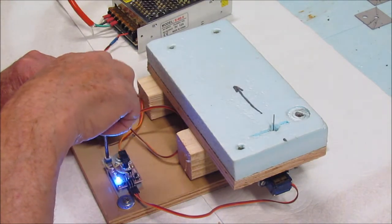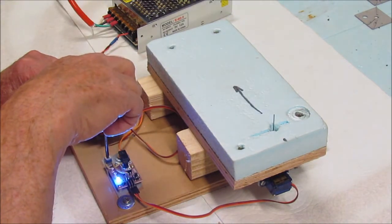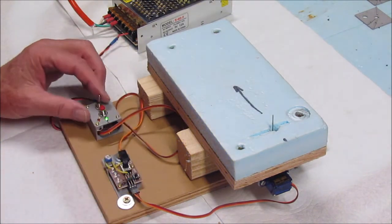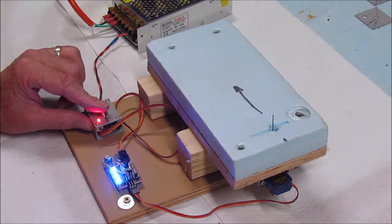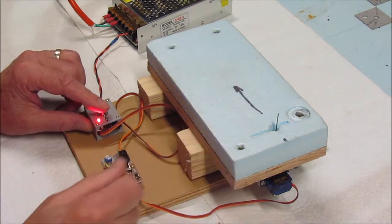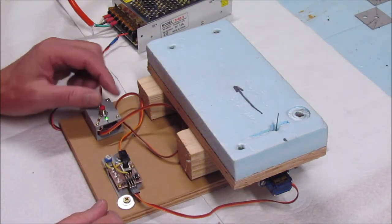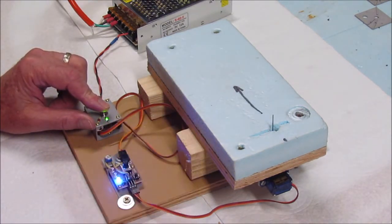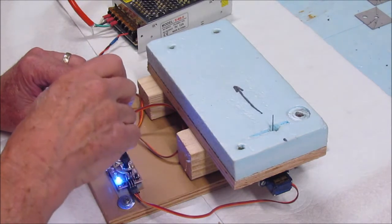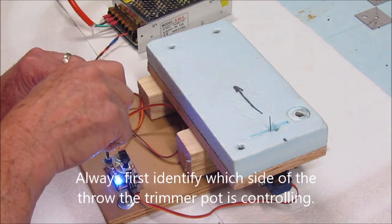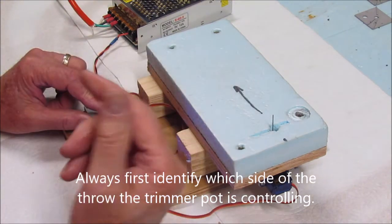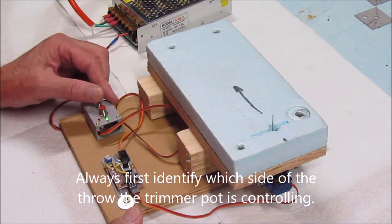And bring the throw back towards the center like that. So between the two of them, I can make the throw a lot shorter than it was before. If I need to adjust the throw on this one side, now I know that the trimmer pot is the one to use. And if I need to adjust the throw on the other side...